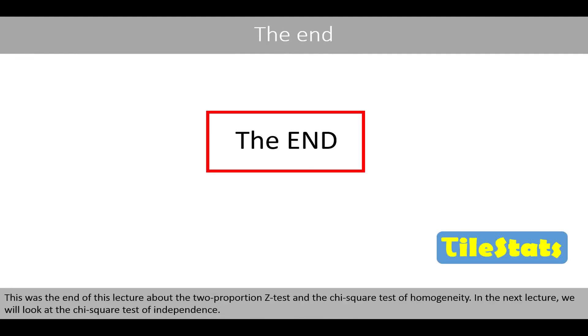This was the end of this lecture about the two-proportion z-test and the chi-square test of homogeneity. In the next lecture, we will look at the chi-square test of independence. Thanks for watching.